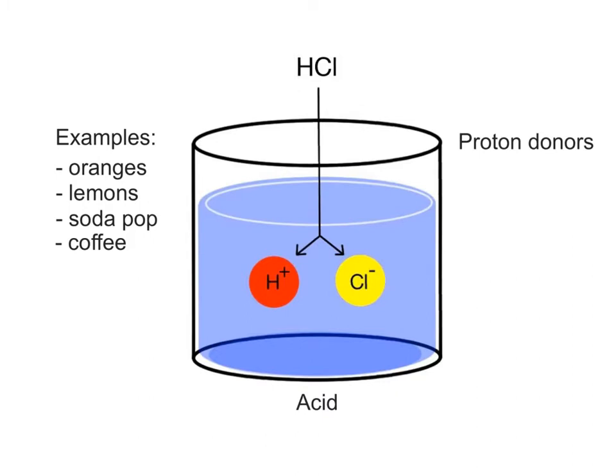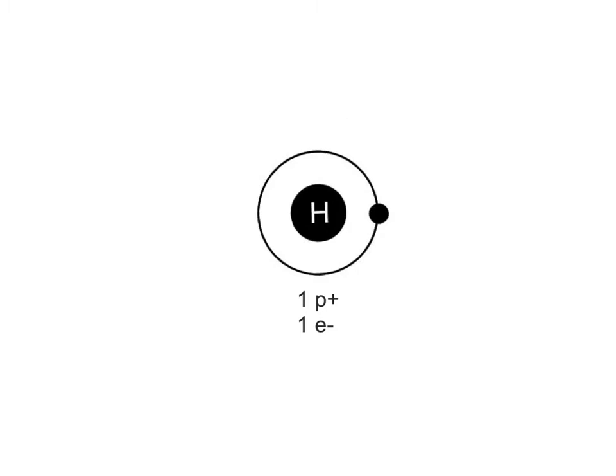Acids are also referred to as proton donors because hydrogen ions consist of just one proton having one positive charge. A hydrogen atom in an acid contains one proton in its nucleus and one electron. When it ionizes, it loses its electron and becomes a hydrogen ion, leaving it with its single proton and a positive charge of plus one. So when you see hydrogen ions, think protons.